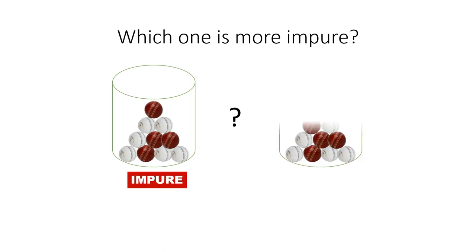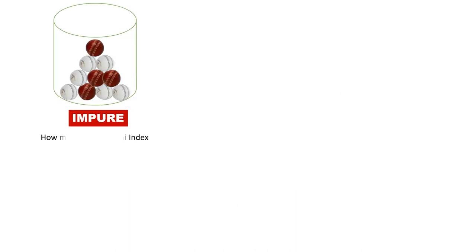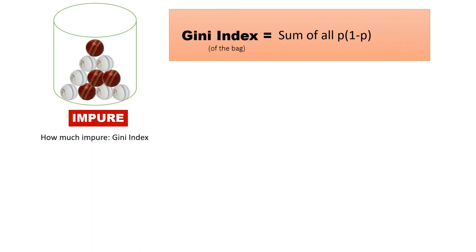But how do we know how much impure is this bag? More or less impure than this bag? The answer is Gini index, and we can find which bag is more impure by calculating the Gini index of both bags. The formula for Gini index is summation p(1-p) for all types of balls in the bag.